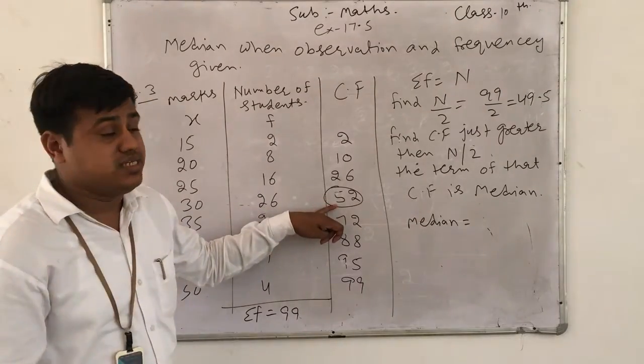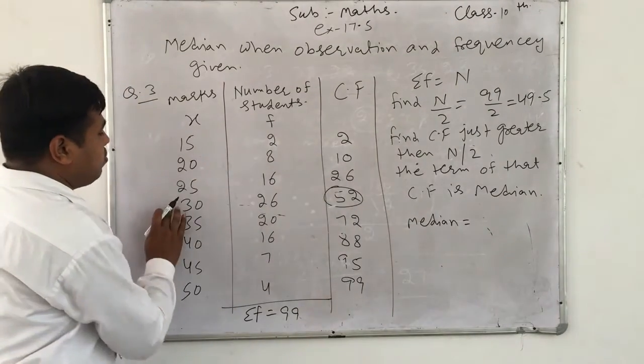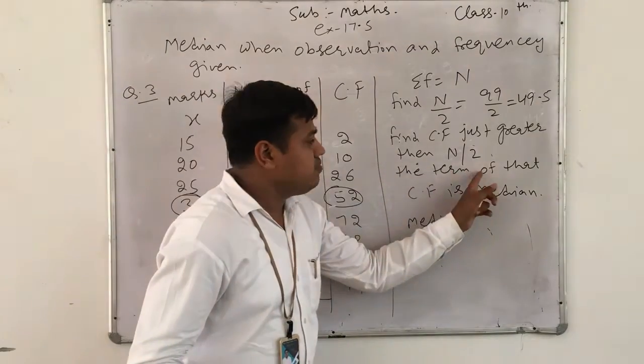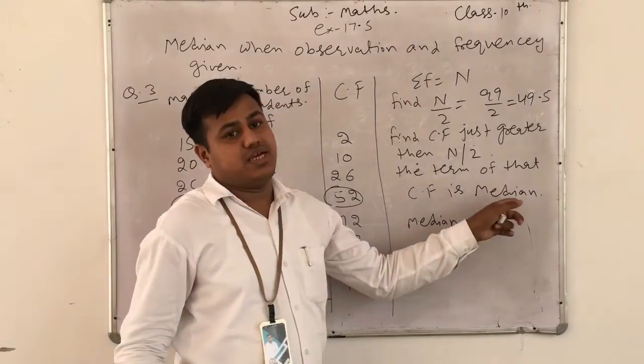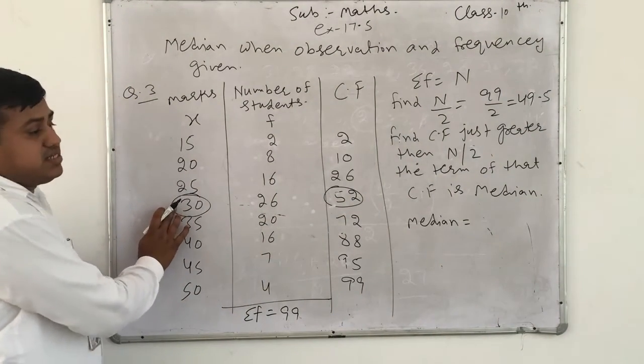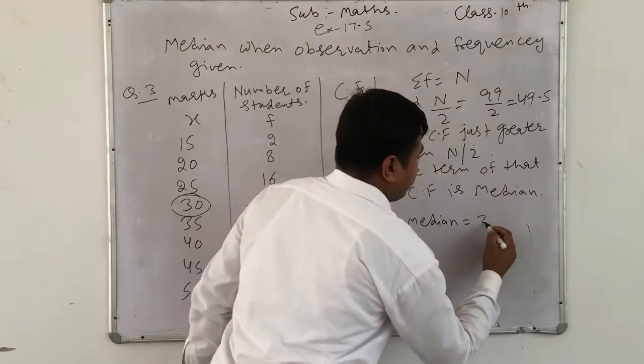52 is just the following CF, which marks, and that is the median. So median is 30.